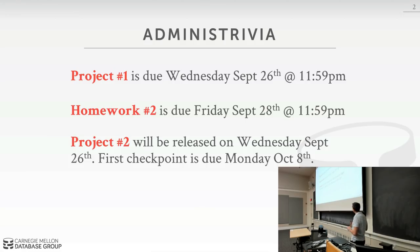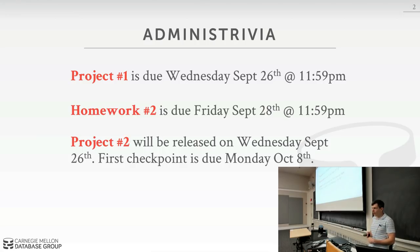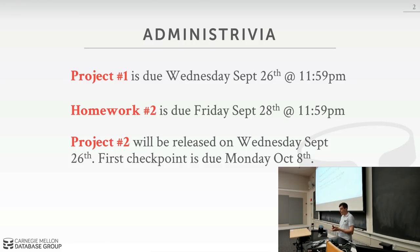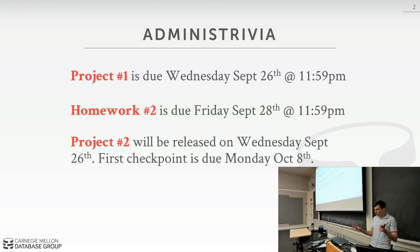Homework two was originally due this Wednesday, but it's been bumped out to be due on Friday at midnight. Project two will be announced on Wednesday in class this week. For project two, we're going to do checkpoints. In the first week and a half, you'll have to submit something on Gradescope to get the first half of the project done, and then the final grade will be due a week and a half after that.